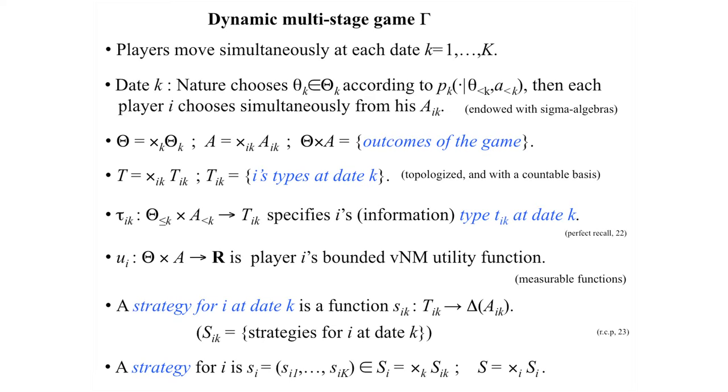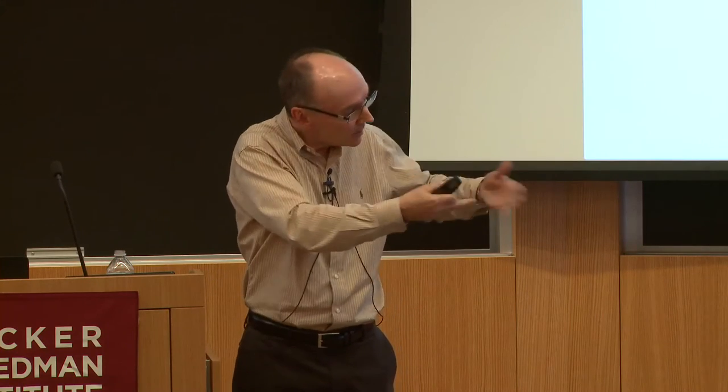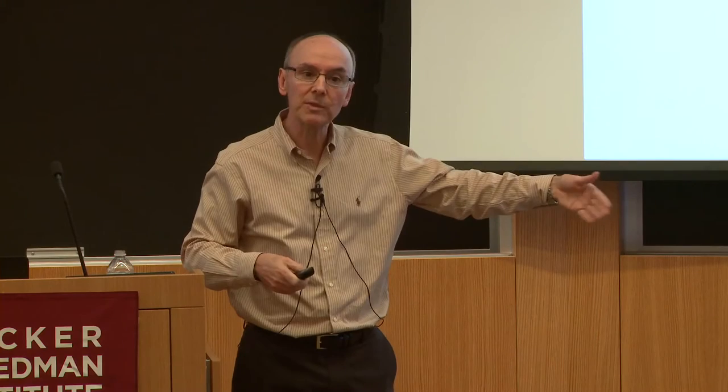Why does nature randomize at every date rather than just at the beginning? The answer is that it allows us to prove our theorem. We have a lot of independence built in there. I don't know how to write it down if we suppose nature chose just once at the beginning — that should in some sense be enough, but I can't map that structure into the assumptions needed to prove the theorem.